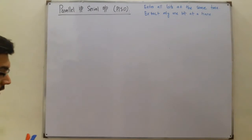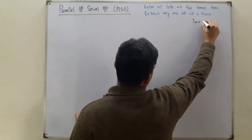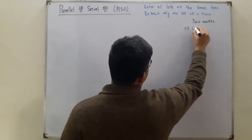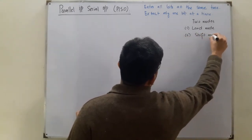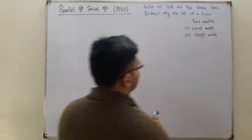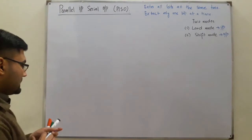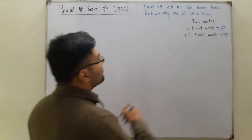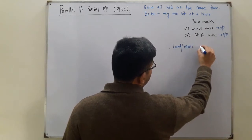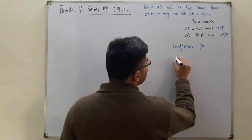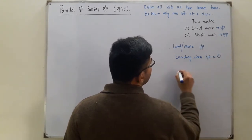In this register we have a control called the shift or load control. We have two modes of operation: number one is the load mode, and the second is the shift mode. The load mode is for the parallel input, and the shift mode is for the serial output. We have a single control for this — the load/shift input — and this load input is an active low signal.